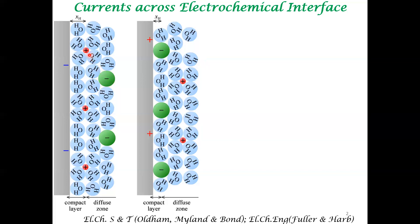Whether the ions interact via the solvation shell or directly get absorbed to the electrode surface depends upon the affinity of the solvation layer — that is not of relevance here. But the point to note is that because of polarization of the electrode, there is preferential absorption of a particular kind of ions onto the electrode surface. This capacitor is called a double layer capacitor because there is one layer at the electrode and a second layer in the electrolyte — this is a double layer electrochemical capacitor.